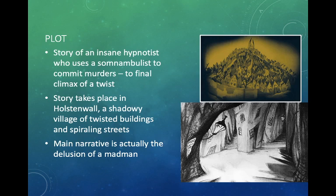This is the plot of the film. It is basically the story of an insane hypnotist who uses a somnambulist to commit murder, and at the end we see a twist. The story takes place in Holstenwall, a shadowy village of twisted buildings and spiraling streets, and the major narrative is around the delusion of a madman, which provides the twist of the story.